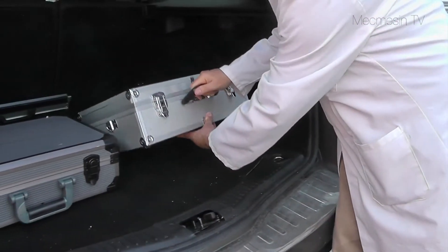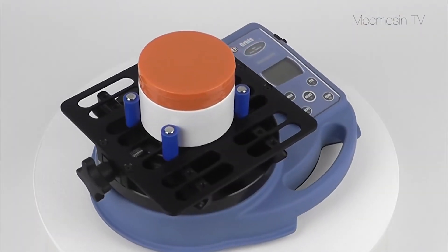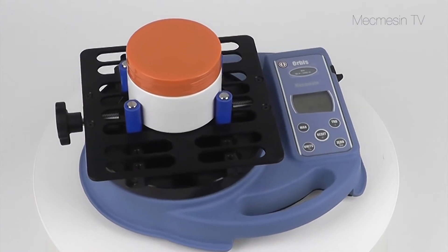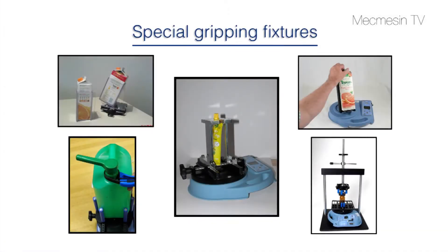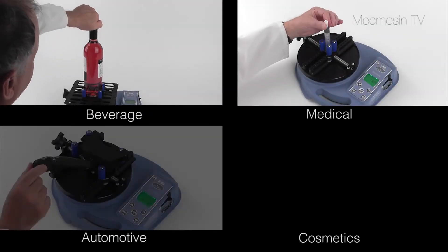Take the Orbis with you when visiting your customers or suppliers. The top plate can accommodate a wide variety of containers or we can design and manufacture gripping fixtures to your specification. The Orbis is suited to a variety of industries.